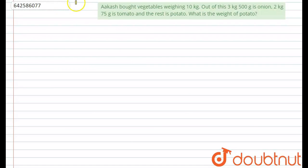Hello everyone, the question is: Akash bought vegetables weighing 10 kg, out of which 3 kg 500 grams is onion, and 2 kg 75 grams is tomato, and the rest is potato. What is the weight of potato?